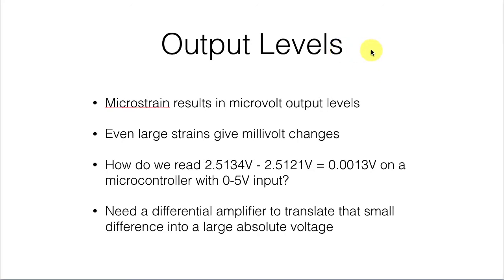Now, keep in mind that our output levels are going to be very small because microstrain is going to result in microvolt output levels. So even if we get a thousand microstrain, we're still talking about millivolts. So we're trying to read the difference between a very small increase and a very small decrease in voltage to pull out just something on the order of a 1.3 millivolt difference. And to do that, we really need to have an amplifier in the circuit to translate that small voltage difference into a large absolute voltage.